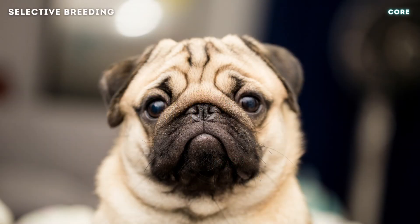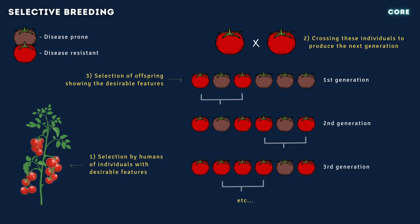Next, you need to know about selective breeding. Selective breeding, also known as artificial selection, is a process in which humans deliberately choose individuals with desirable traits and encourage them to reproduce, aiming to enhance those features in successive generations. Humans select individuals based on specific characteristics like fruit size or disease resistance. By carefully crossing these selected individuals, their desirable traits are more likely to be inherited by the offspring. This process is repeated over multiple generations, with each successive generation undergoing further selection to emphasize and refine the desired features.